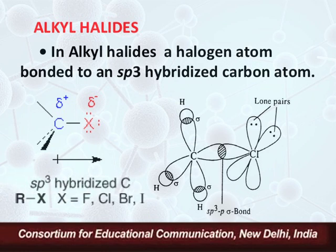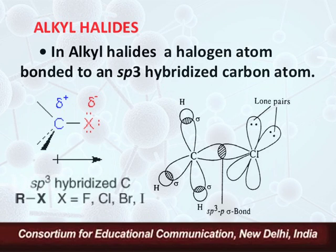If we look into the structure of alkyl halides, the carbon of alkyl halides is sp3 hybridized. I shall illustrate the structure of alkyl halides by taking the example of methyl halide. Since the carbon in alkyl halides is sp3 hybridized, it will form four sigma bonds. Three sigma bonds are formed by overlapping of sp3 hybridized orbitals of carbon with s orbitals of hydrogen.